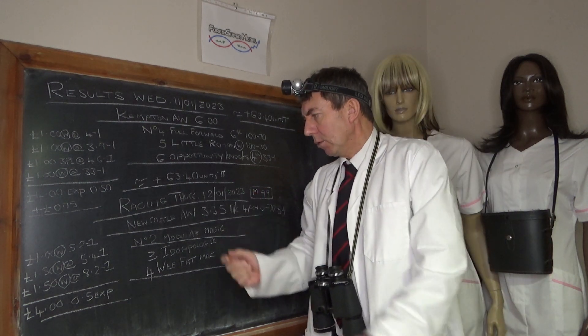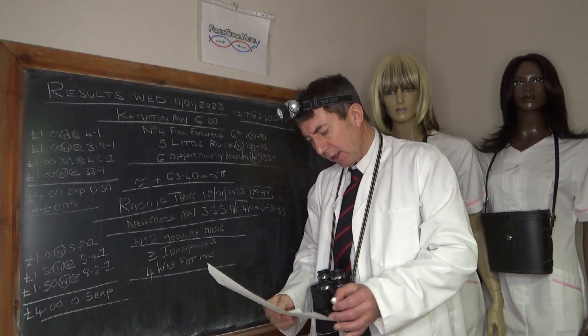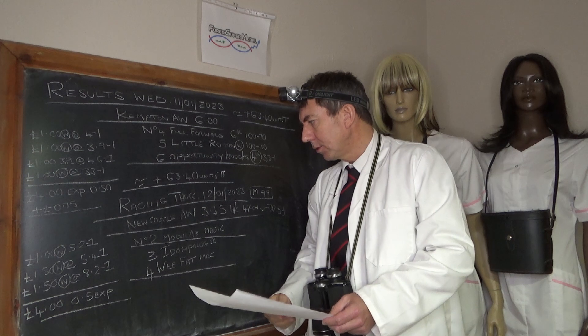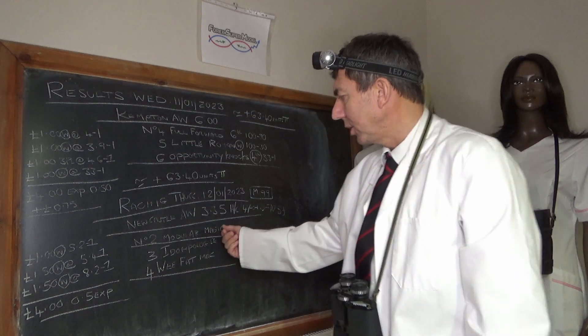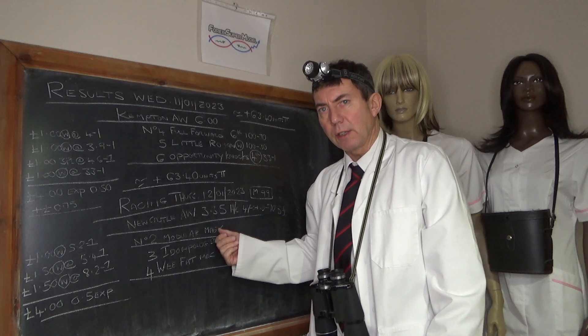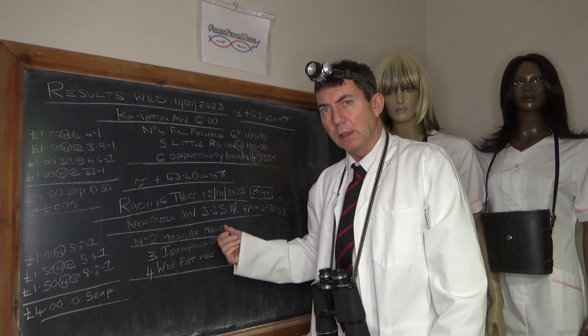Right, there's seven in the race. We're going to have a go at three of them. We're going to use this number two Modular Magic which we like a lot. We think this will set the race up, this horse.